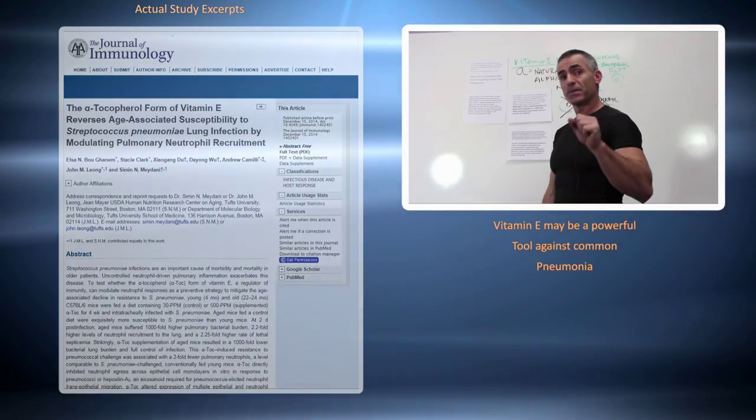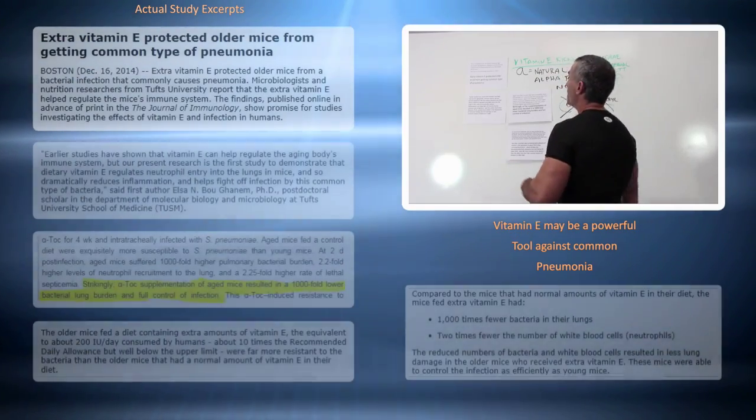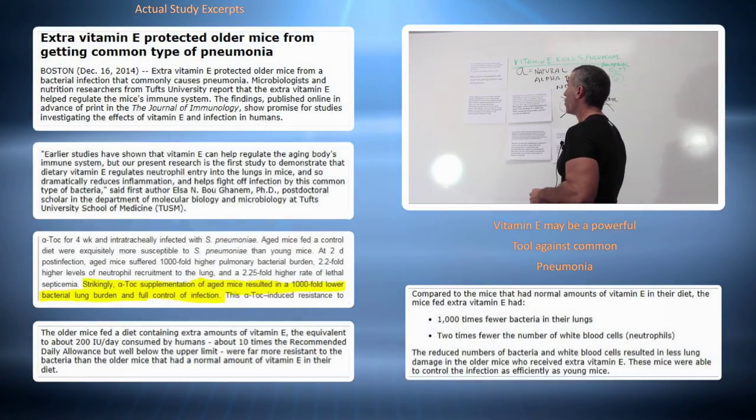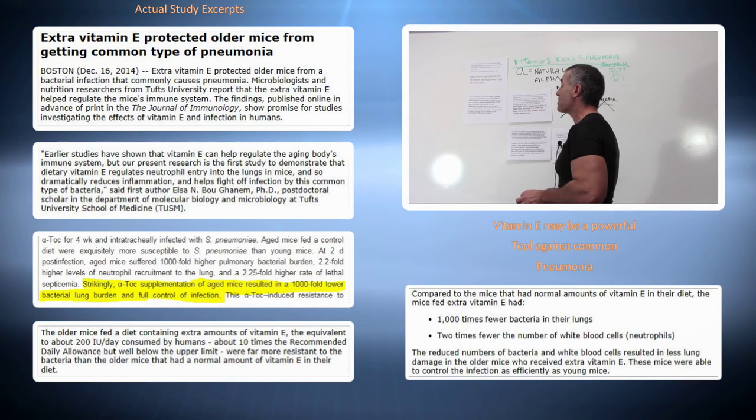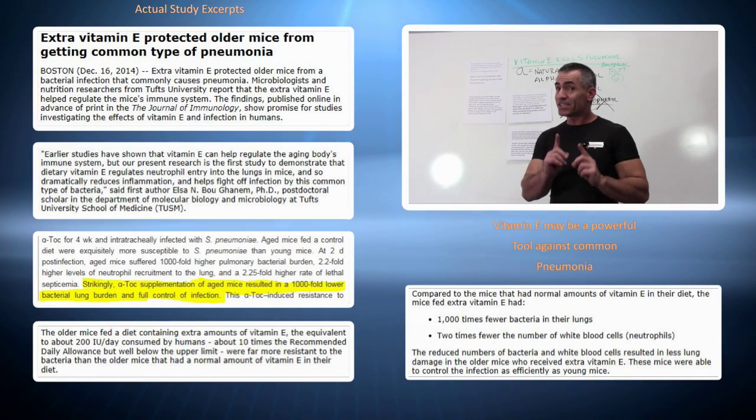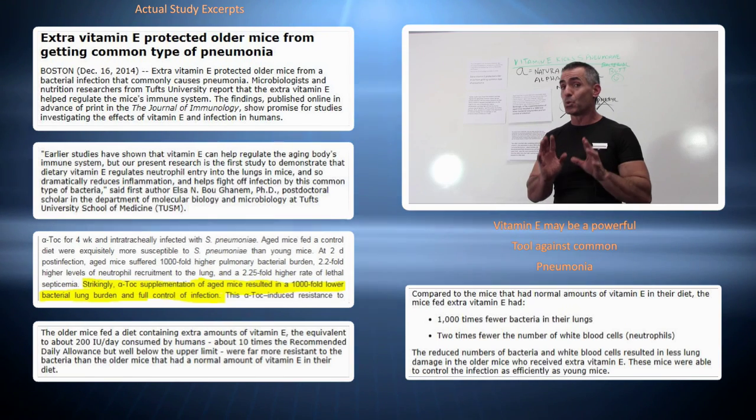Now the easier title, the general press release title: Extra vitamin E protected older mice from getting common type of pneumonia. This didn't just protect them. I mean it blew it away.